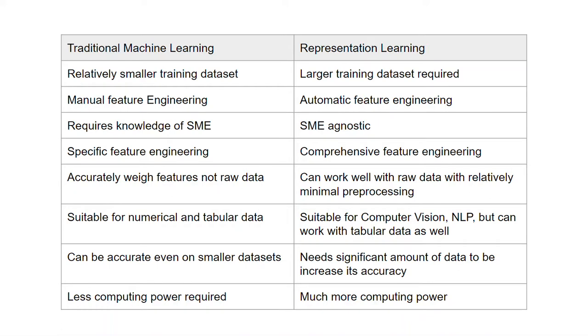The feature engineering process in traditional ML projects is generally manual. The feature engineering process is automatic when it comes to representational learning. Traditional ML is tightly coupled with the knowledge of a domain expert and he has to be involved in the entire feature extraction process. In deep learning, the feature extraction is SME agnostic.